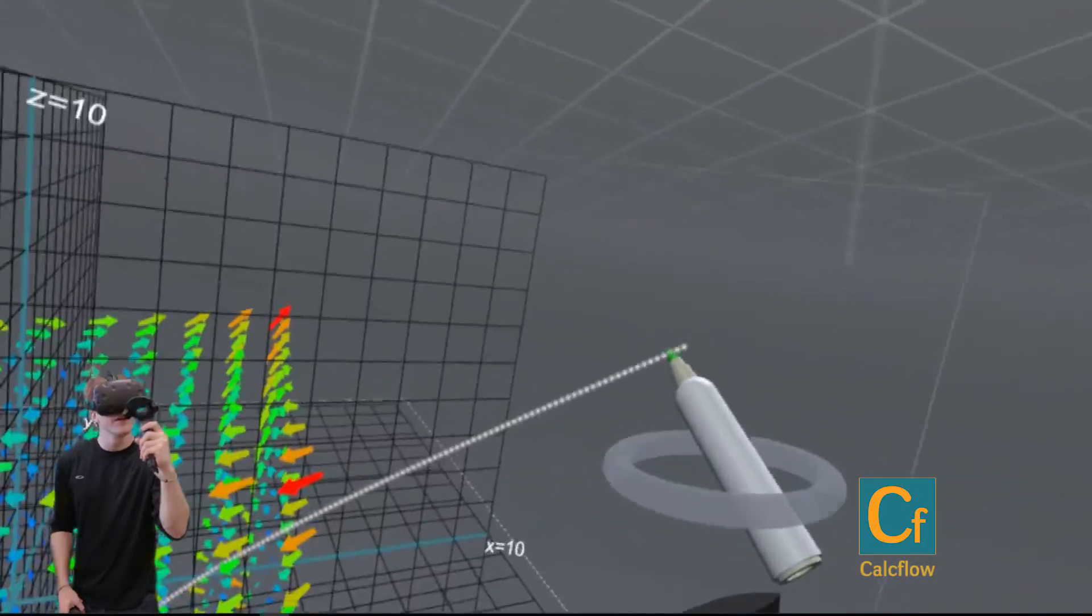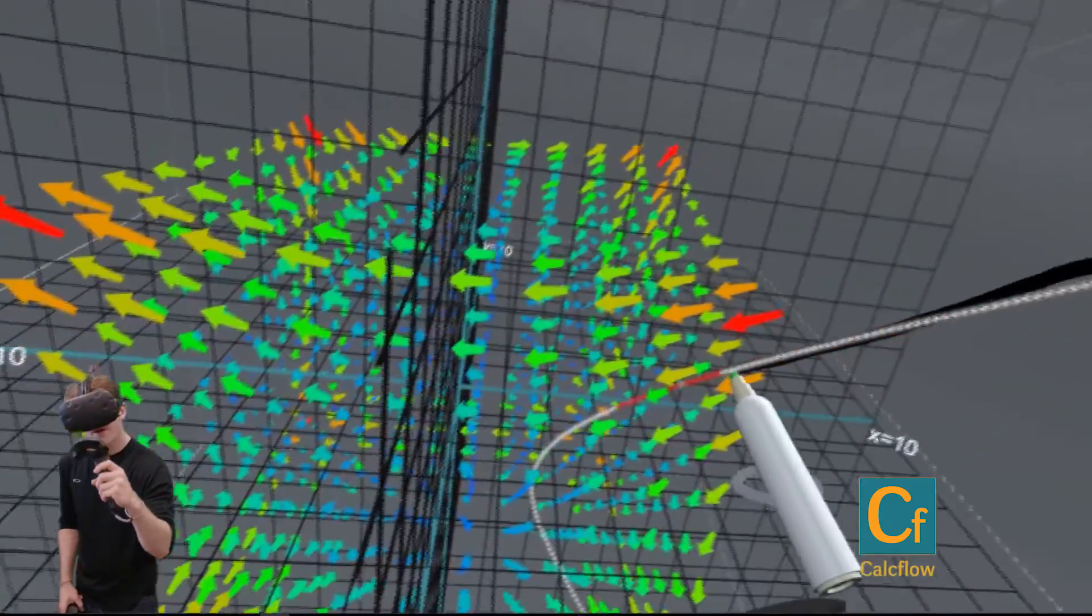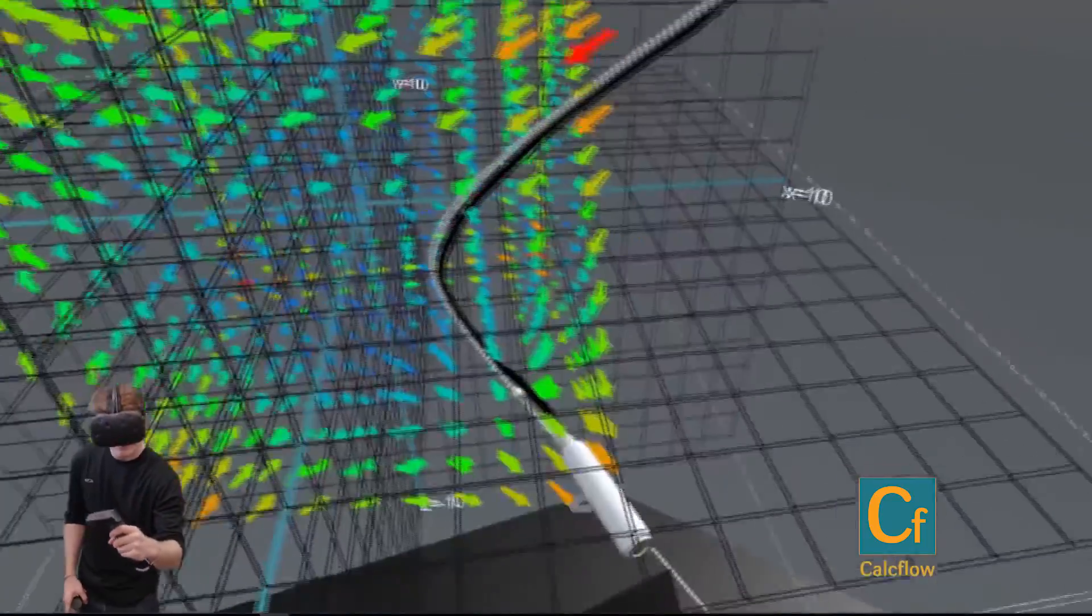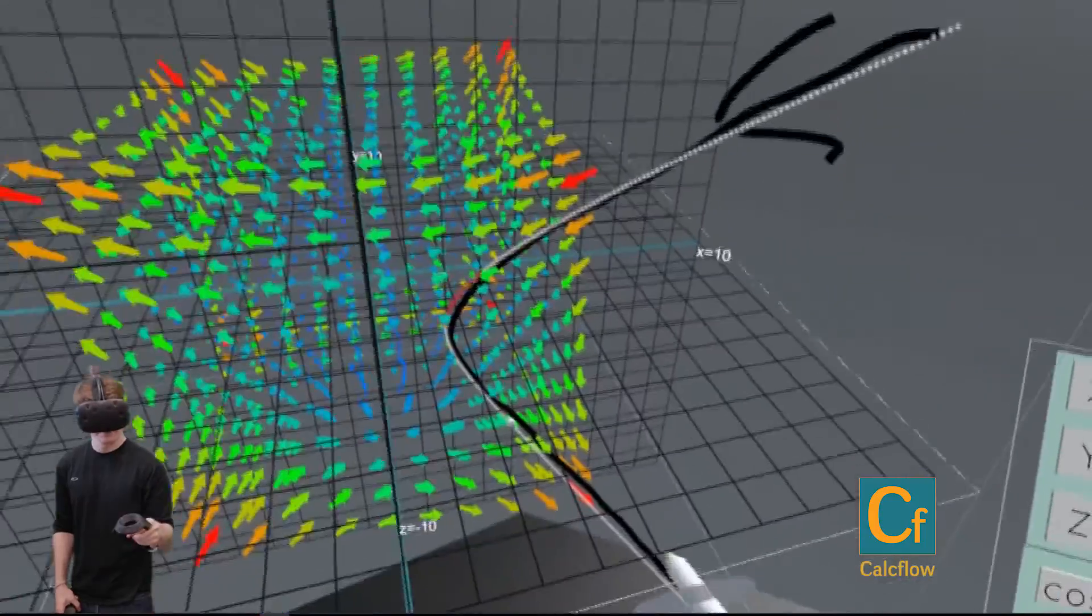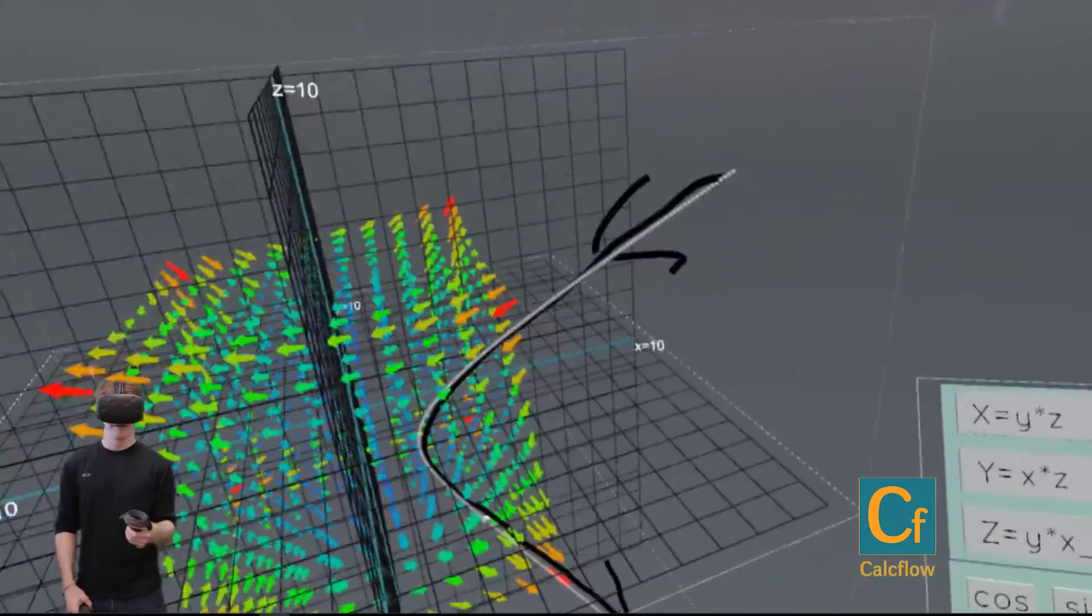So we start here and we go into the vector field and then we go out of the vector field. I'm just going to go ahead and draw arrows to show that it is entering and exiting.